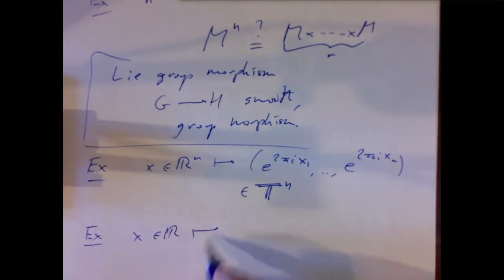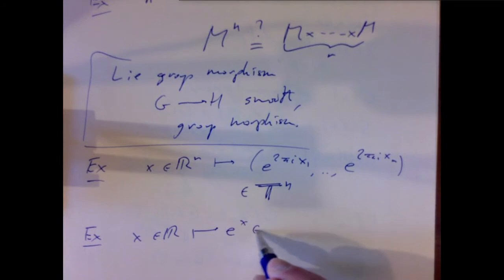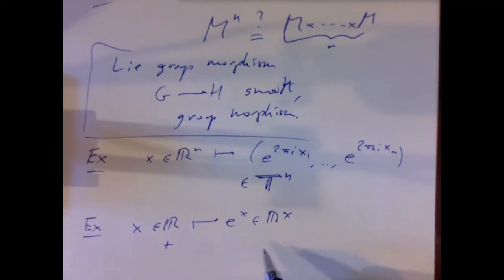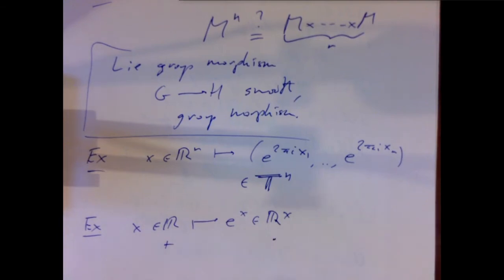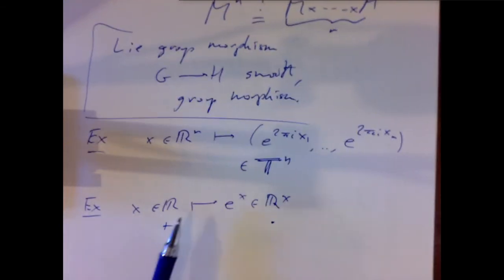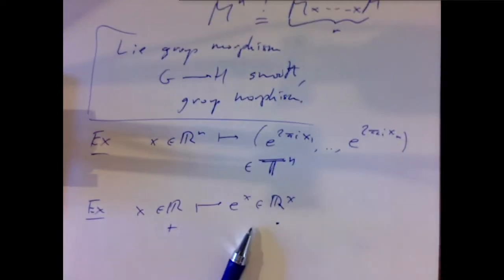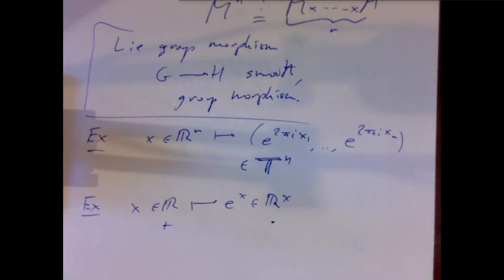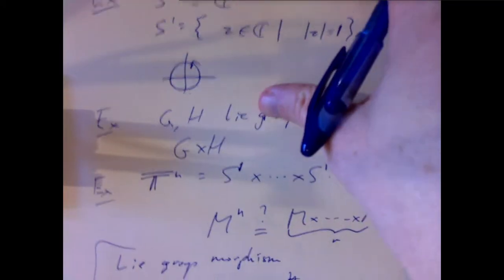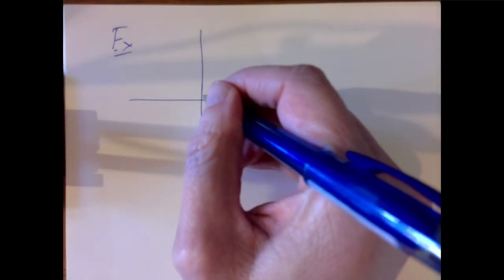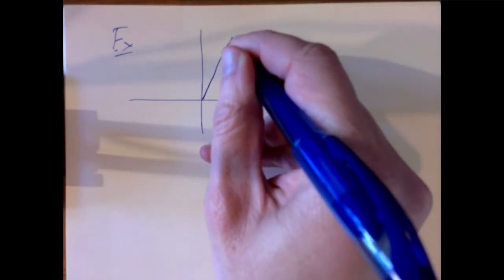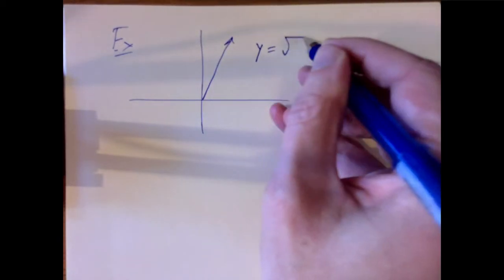Often we'll write Lie groups with multiplicative notation, though sometimes we use additive notation. To see how bad Lie group morphisms can get, consider the worst example: take the plane, and in the plane take a line with irrational slope — say y = √2·x.